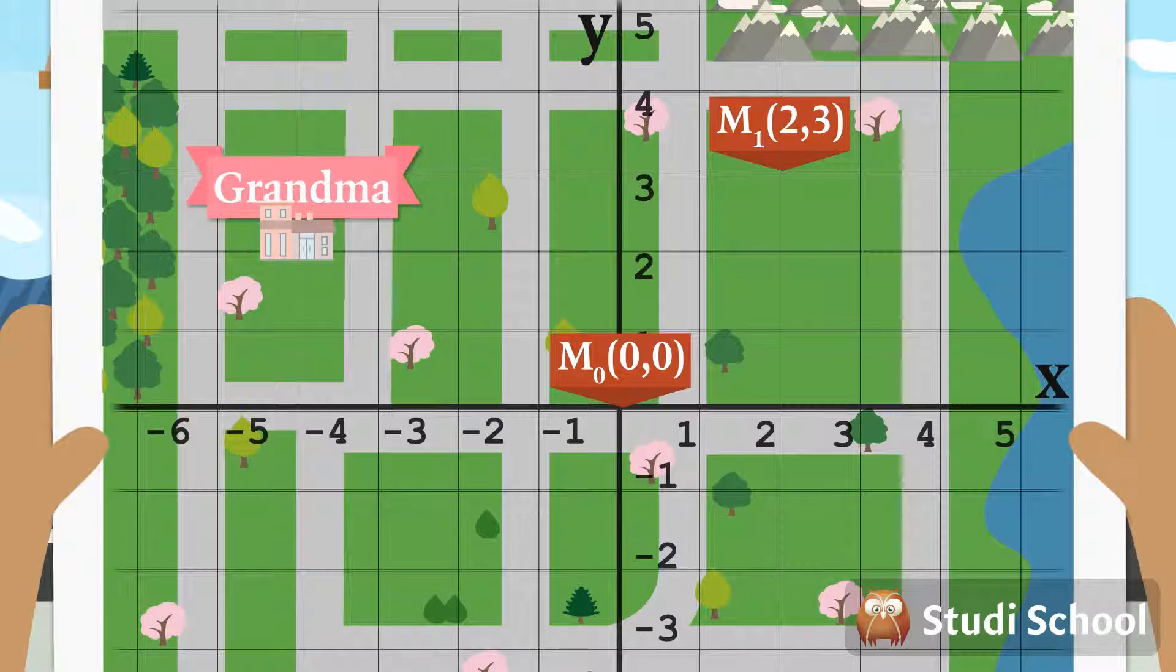This is Mary's grandmother's house, which as you can see is located on the other side of the Y-axis. Just like the number line, the X and Y-axis also have negative values.